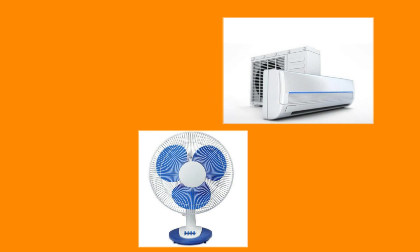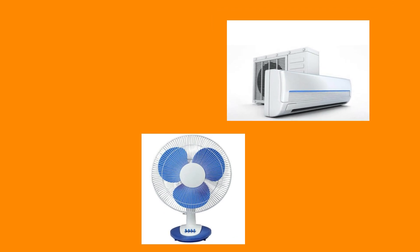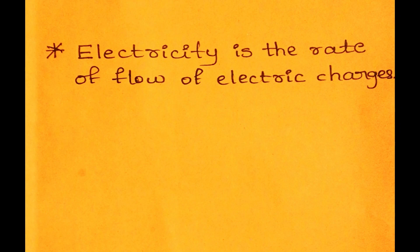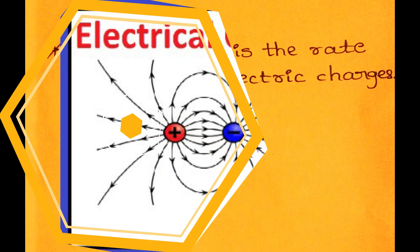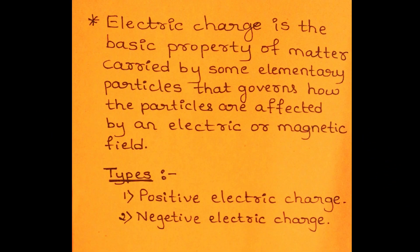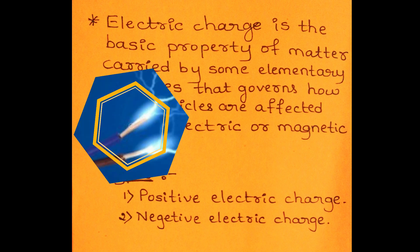In everyday life, you might have observed the working of different appliances in your home and outside, like television, air conditioner, heater, fans, electric bulbs, etc. They need electricity to function. So, electricity is the rate of flow of charges. Electric charge is the basic property of matter carried by some elementary particles that governs how the particles are affected by an electric or magnetic field. There are two types of electric charges: positive electric charge and negative electric charge.